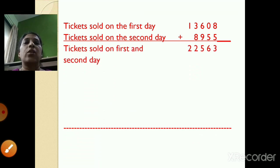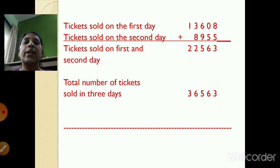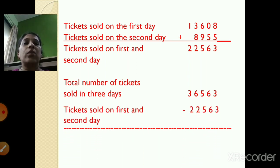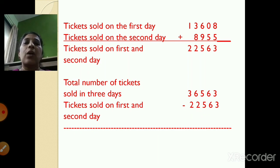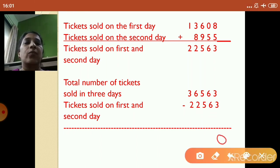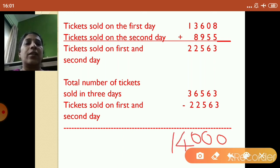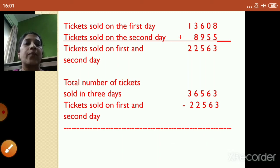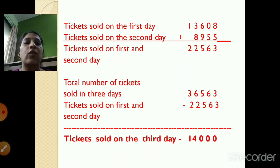So the tickets sold on the first and the second day is 22,563. Now the total number of tickets sold in 3 days was 36,563. Let's carry out the subtraction. 3 minus 3 is 0. 6 minus 6 is 0. 5 minus 5 is 0. 6 minus 2 is 4. And 3 minus 2 is 1. So how many tickets were sold on the third day? 14,000 tickets. The tickets sold on the third day was 14,000.